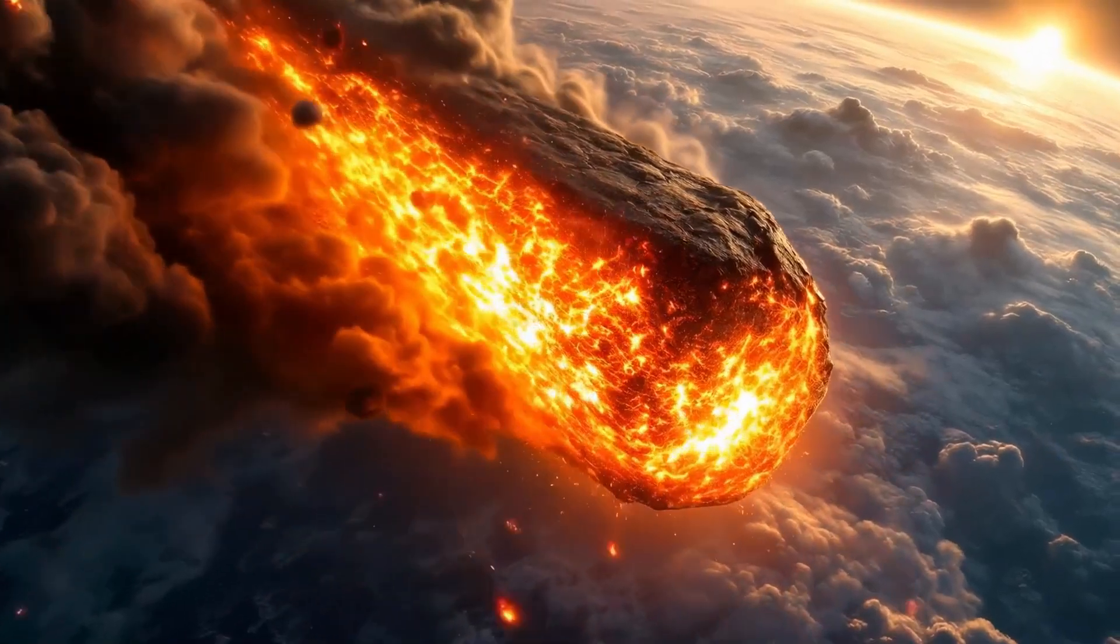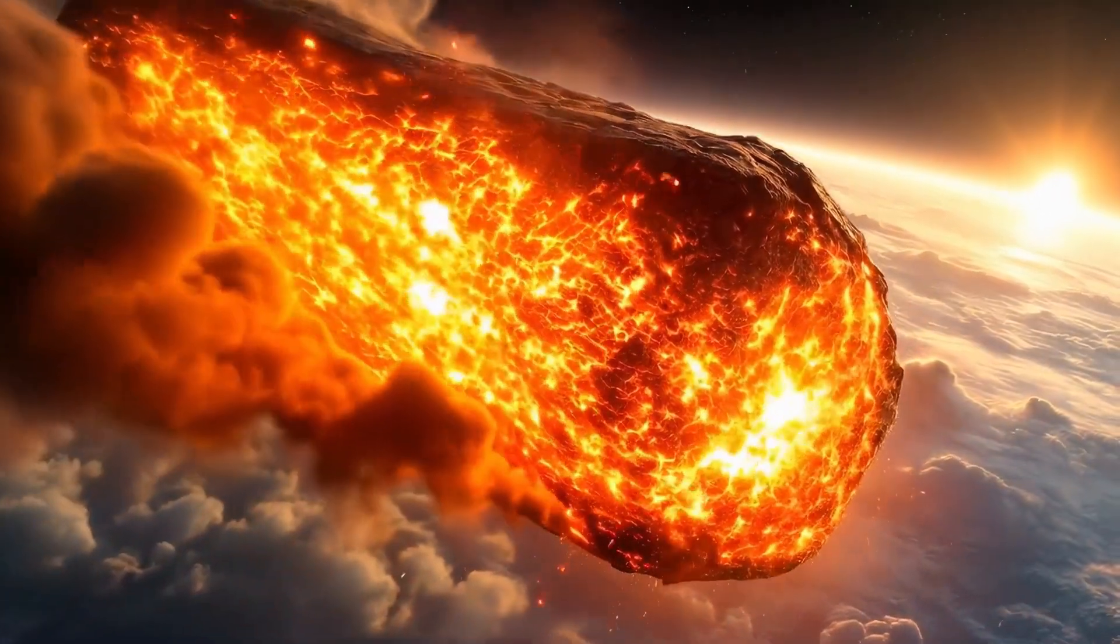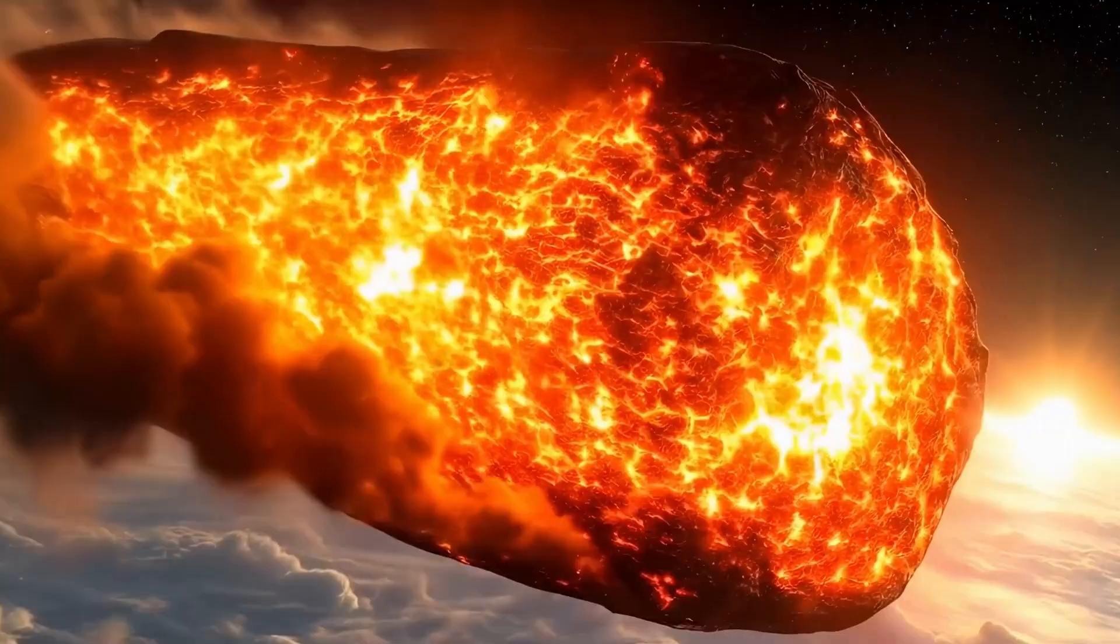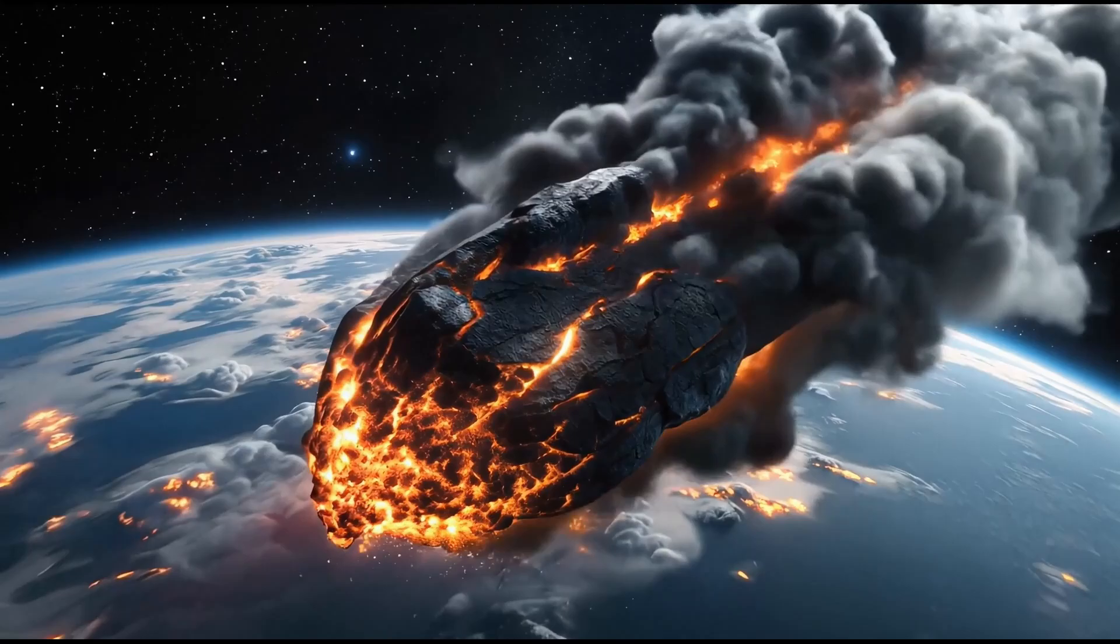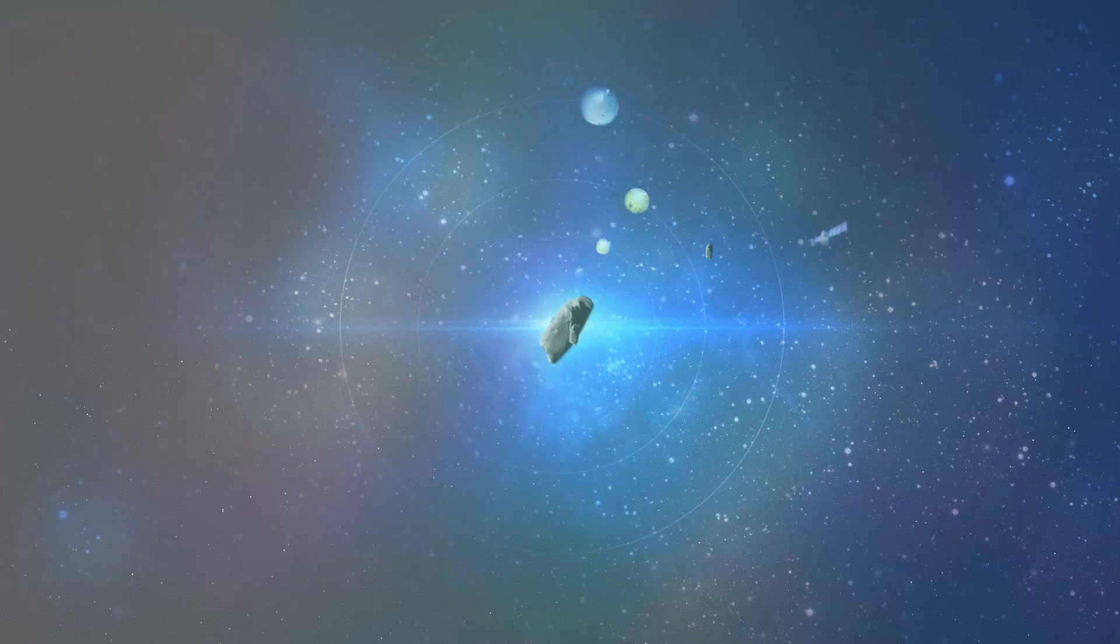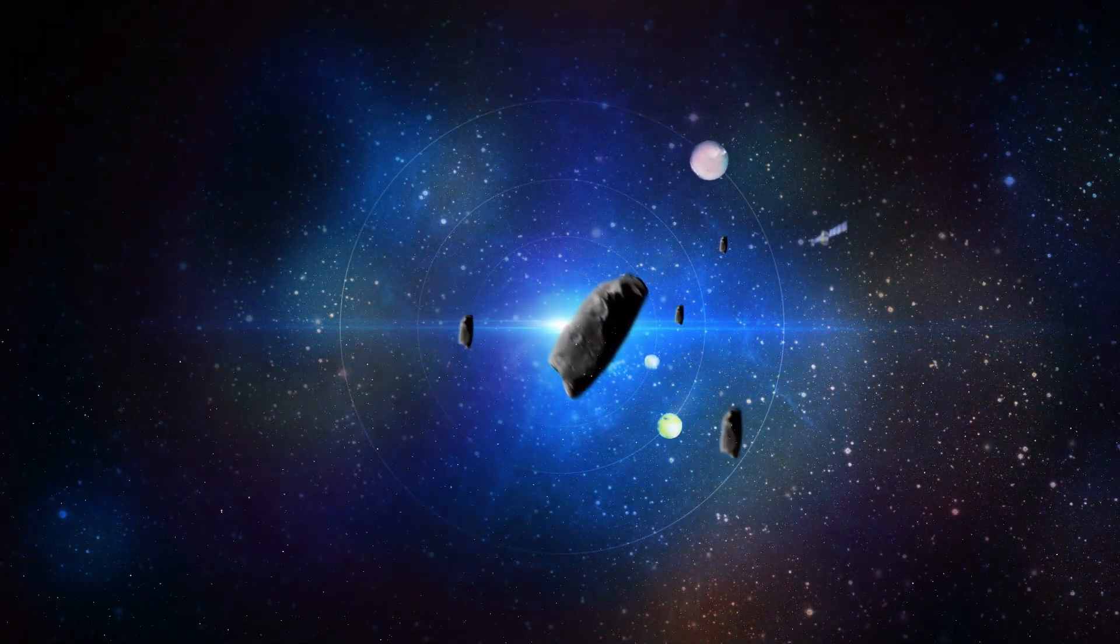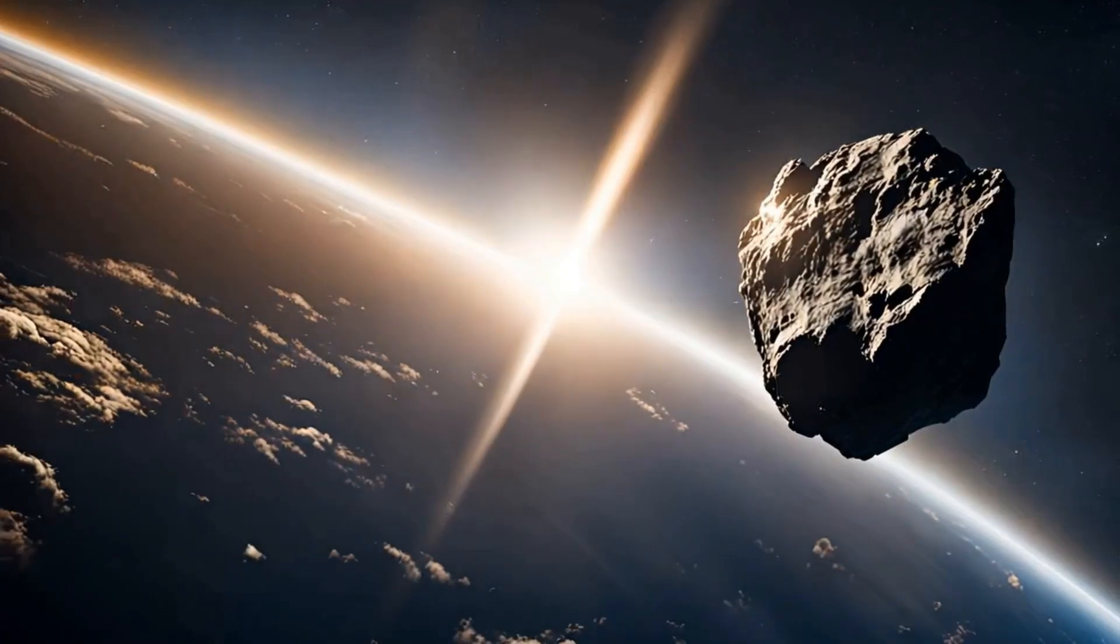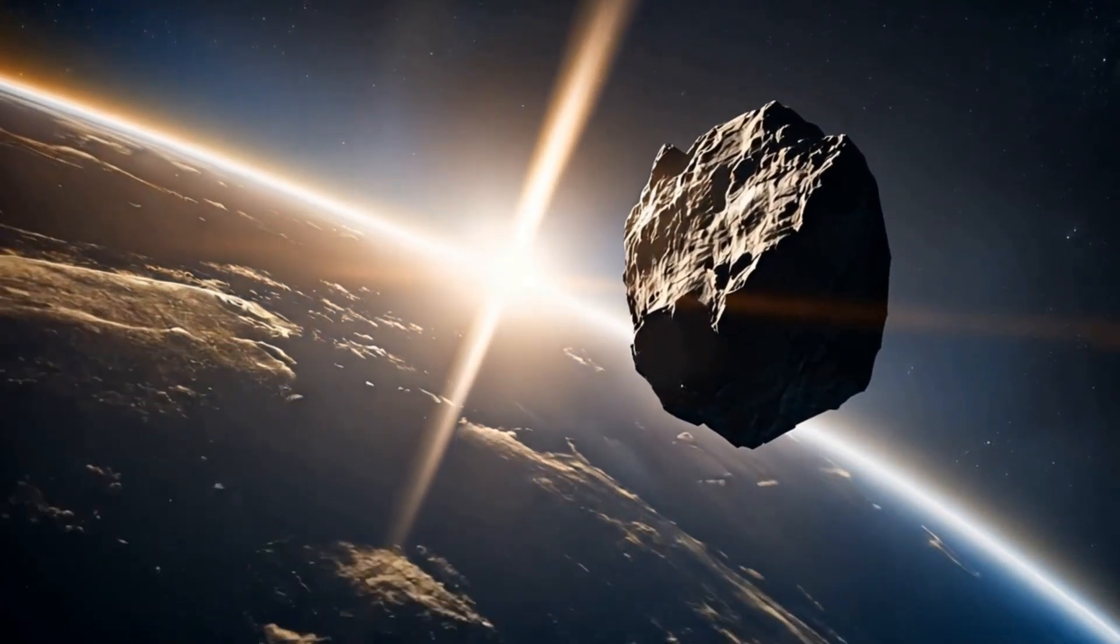First things first, there's no reason to panic. 3I Atlas poses no threat to Earth. Its closest approach will be around 1.6 AU, roughly 600 times farther than the Moon. Its orbit is highly eccentric, around 6 on the scale. For comparison, a perfect circle has an eccentricity of 0, while anything above 1 means the object is escaping the Sun's gravity. A value of 6 makes it one of the most extreme hyperbolic orbits ever recorded.